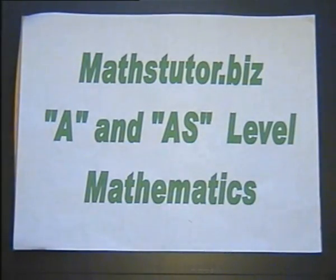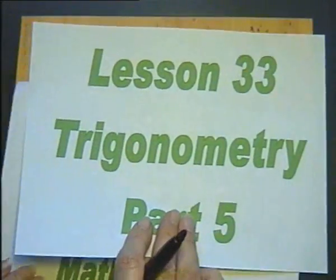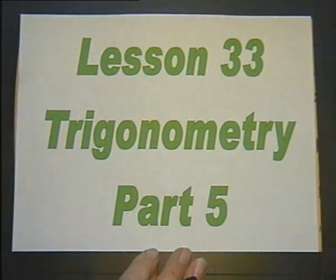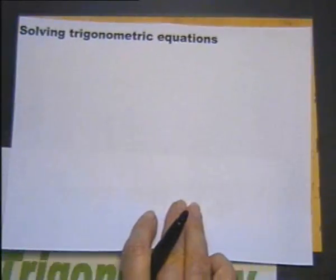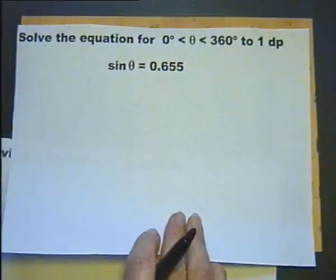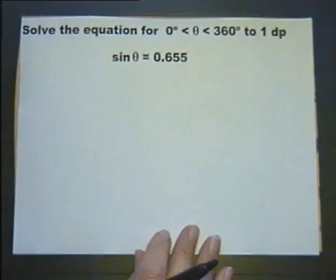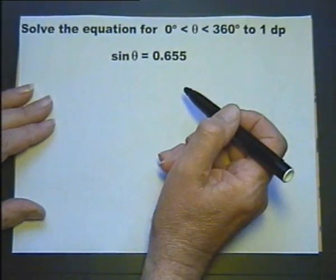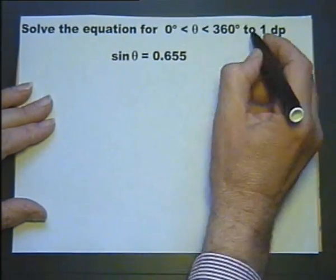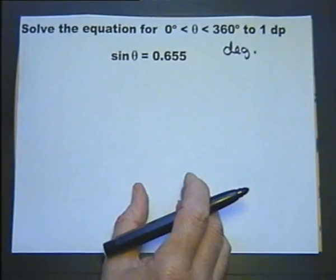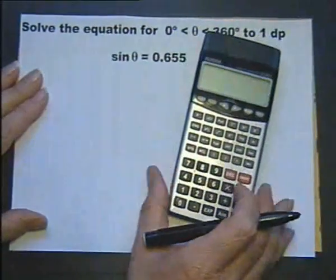I and S level mathematics lesson 33, trigonometry part 5, looking at solving trigonometric equations. Solve the equation for values of theta between 0 degrees and 360 degrees to one decimal place. The first thing to spot is we're actually in degree mode, so we need to make sure our calculator is in degree mode.